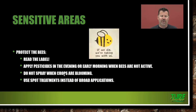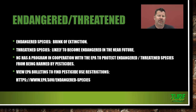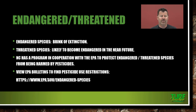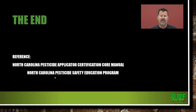Protect our bees: read the label. In areas with bees, you may have to notify the owners of the beehive, apply pesticides in the evening or early morning when the bees are not active, do not spray when crops are blooming, and use spot treatments instead of broad applications. Regarding endangered and threatened species: endangered means on the brink of extinction — just a few left. Threatened means likely to become endangered in the near future. North Carolina has a program in cooperation with the EPA to protect endangered and threatened species from being harmed by pesticides. View the EPA bulletins to find pesticide use restrictions at epa.gov/endangered-species. That will conclude Chapter 6, Pesticides and the Environment. See you in the next lecture.